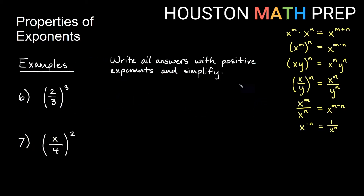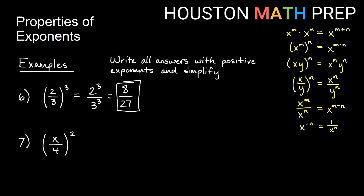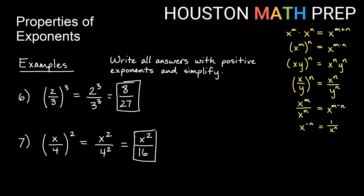Let's look at examples, writing all answers with positive exponents. First, 2 thirds all cubed: apply the power to each piece, giving 2 cubed over 3 cubed. 2 cubed is 8, and 3 cubed is 27, so the answer is 8 over 27. Next, x over 4 all squared: apply the square to the top to get x squared, and to the bottom to get 4 squared, which we evaluate as 16. The answer is x squared over 16.